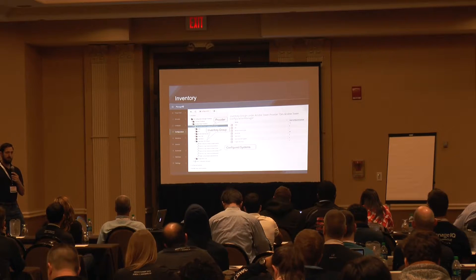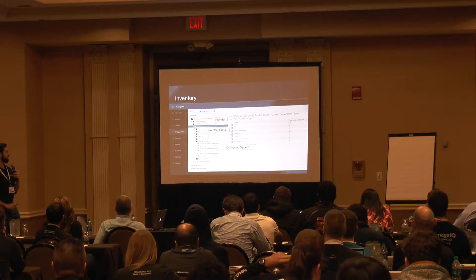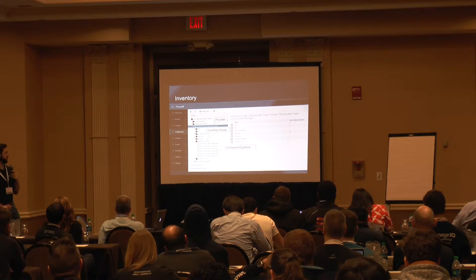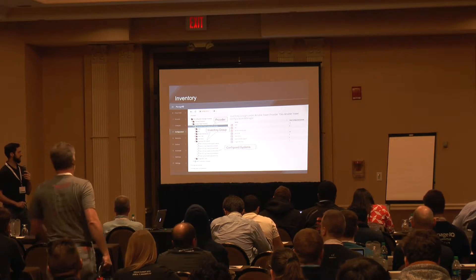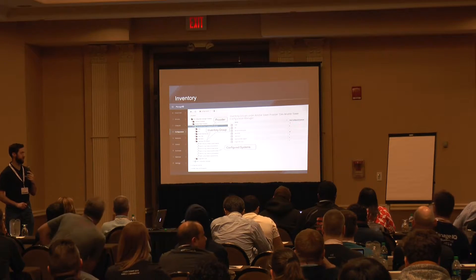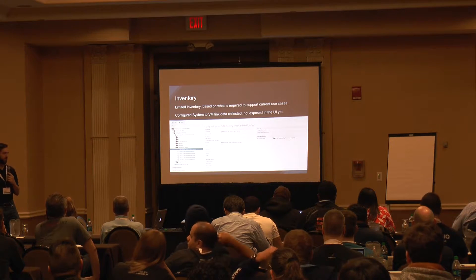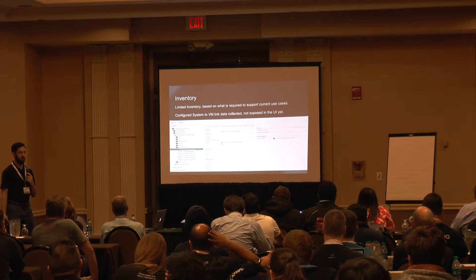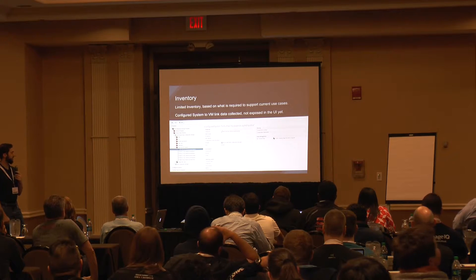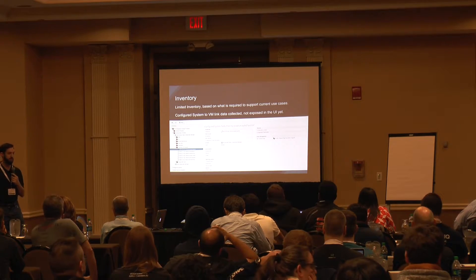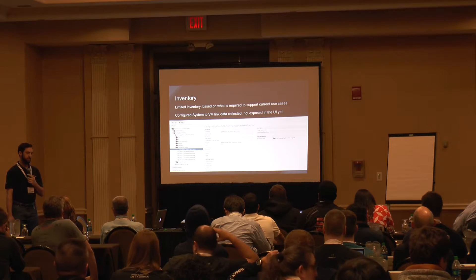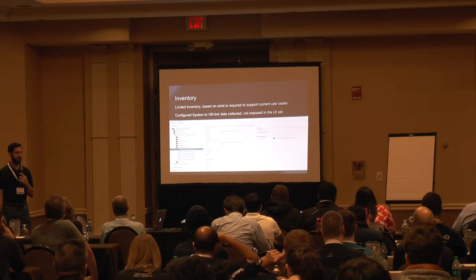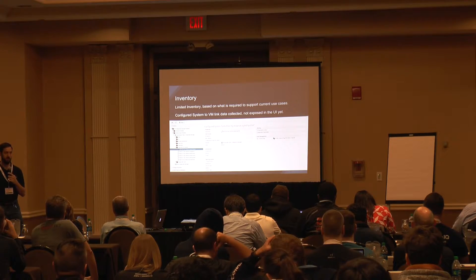Once your provider is added and it does an initial refresh, you can see on the left side it'll list all your Ansible Tower providers. Under the provider you'll see all your inventory groups, and under the inventory groups you'll see the configured systems. The inventory is a little bit limited right now, but we pulled back everything needed to support the current use cases and can definitely enhance that in the future. There's also a configured system to VM link in the database — we just need to add that to the UI to show the relationship between a VMware VM and an Ansible Tower configured system.